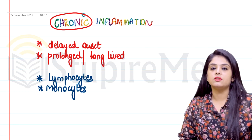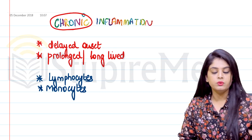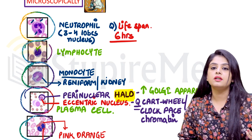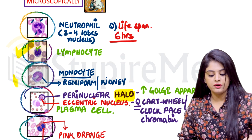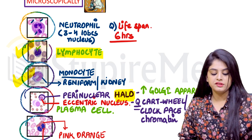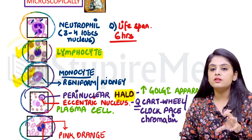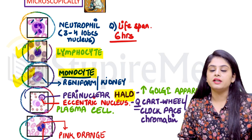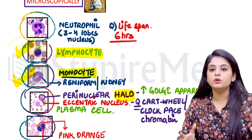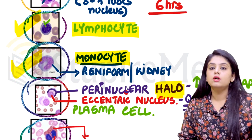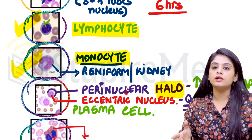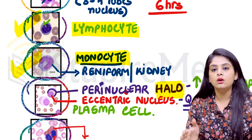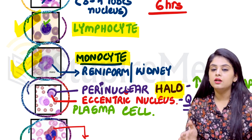We had discussed these particular cells when we were discussing acute inflammation — the different types of cells and how they appear microscopically. A lymphocyte is a normal-looking cell with a central nucleus and no abnormality. The next cell is a monocyte, identified by its kidney-shaped or reniform nucleus. Kidney, renal — that is how we remember. So these are the two main cells in chronic inflammation.